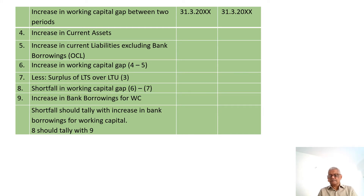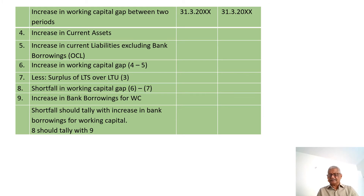This is the simplest form of funds flow statement, divided into three parts. Find long-term sources; find long-term uses; find surplus or deficit. Then find whether there is an increase or decrease in current assets and in other current liabilities, and determine the increase or decrease in working capital gap. From that, deduct the surplus or deficit in long-term sources over long-term uses to get the shortfall or surplus — which tallies with the change in working capital finance.